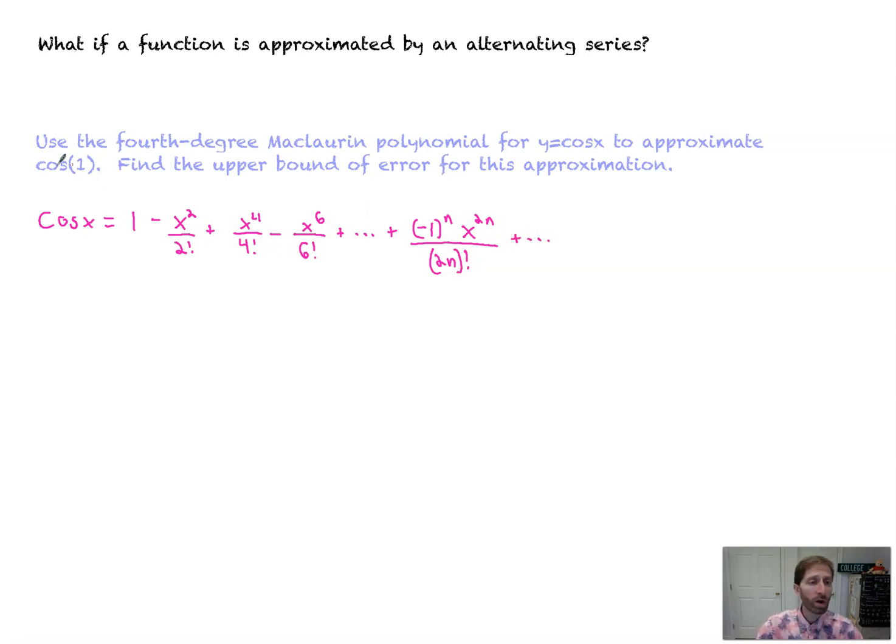Okay, now looking at this, we're going to use this to approximate cosine of one, but just the first, well, up to the fourth degree. So cosine of one is approximately one minus one squared over two factorial, plus one to the fourth is one over four factorial. That's it. That's your approximation right there.